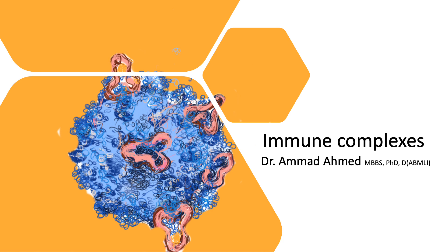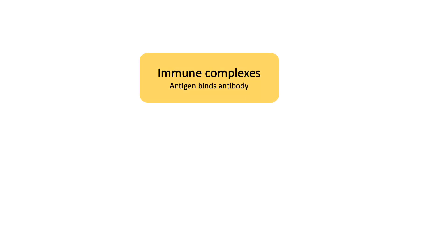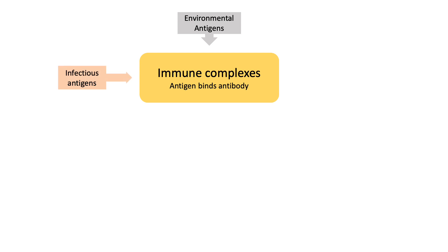Today's video is about immune complexes. Immune complexes are produced when antigen binds with antibody. This is a normal physiological response to get rid of unwanted antigens. These antigens could be environmental antigens or as a result of infections, for example viral hepatitis or streptococcal infections, or autoantigens in diseases like systemic lupus erythematosus.